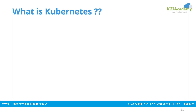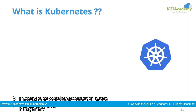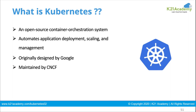Kubernetes helps us manage the complete lifecycle. If I have five or ten containers, it is much easier to manage on a single host. But in production, you will never have a single machine — you would have a lot of machines together. If containers are running on all the machines and there are a thousand containers, someone has to manage that, and Kubernetes is that management layer.